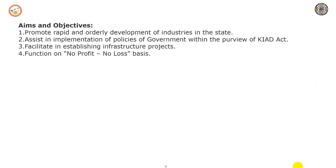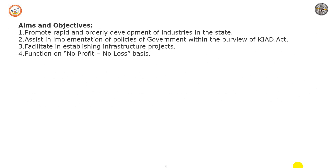The main objectives are to promote rapid and orderly development of industries in the state, assist in implementing government policies within the purview of the act, facilitate establishing infrastructure projects, and function on a no-profit no-loss basis. Major functions include acquiring land and developing industrial areas, providing basic infrastructure, acquiring land for single unit complexes, and acquiring land for government agencies for their schemes and infrastructure projects.